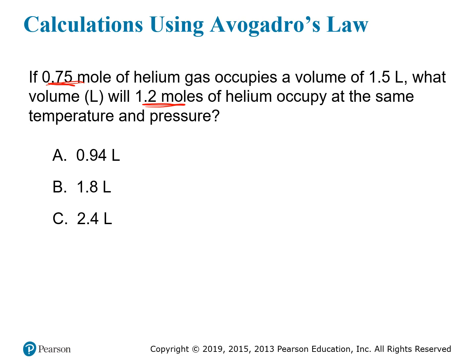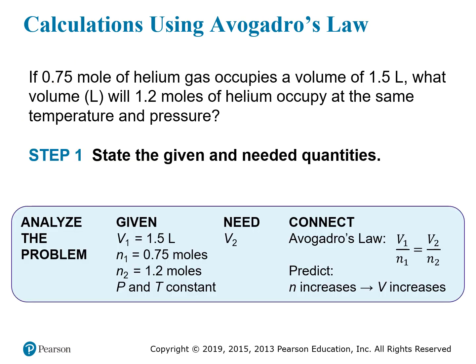Analyzing this problem, we see the number of moles — this is N1. This would be the initial volume, V1. This would be the new number of moles, N2. And it's asking what volume, so that's V2. Temperature and pressure are constant. So we know we're using Avogadro's Law. We know V1, N1, and N2, and we're trying to solve for V2.